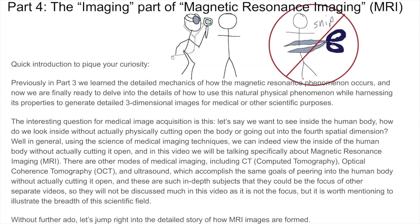The interesting question for medical image acquisition is this: let's say we want to see inside the human body. How do we look inside without actually physically cutting open the body or going out into the fourth spatial dimension? Well, in general, using the science of medical imaging techniques, we can indeed view the inside of the human body without actually cutting it open. And in this video, we will be talking specifically about magnetic resonance imaging, MRI.